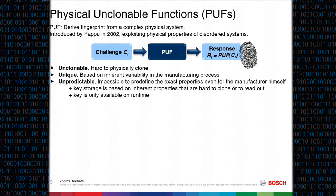PUFs were introduced in 2002 by Pappu. The basic idea is to derive a fingerprint from a complex physical system using the physical properties and exploiting the manufacturing variations of the system. To make use of a PUF, you stimulate it with a challenge and get a response, from which you can derive a fingerprint or a cryptographic key.